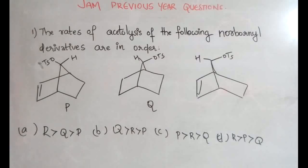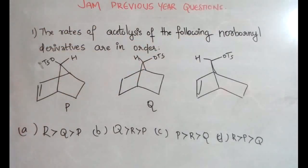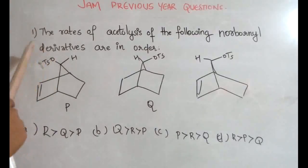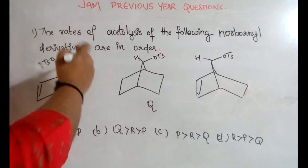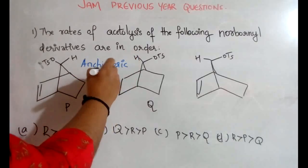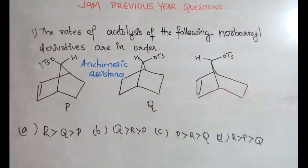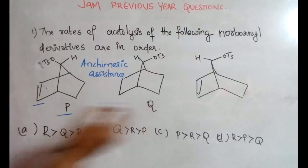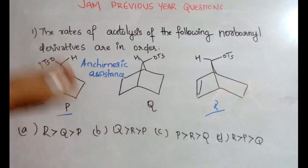The first question is from organic chemistry: the rates of acetalysis of the following norbornane derivatives are in a certain order. I have discussed this question in a previous video. In acetalysis, the OTs group is removed and another group attaches to that position. This follows a process called anchimeric assistance, or neighboring group participation. The double bond can act as a neighboring group and enhance acetalysis.